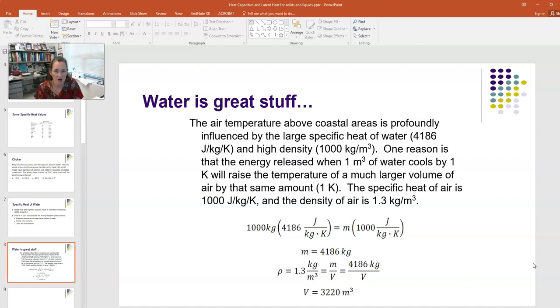What volume of air is that? Water is also extremely dense. The density rho of air is 1.3 kilograms per meter cubed, which equals the mass divided by the volume. So 4186 kilograms divided by the volume equals 1.3 kilograms per meter cubed. Solving for volume, we get 3220 cubic meters.